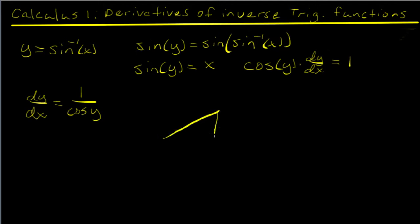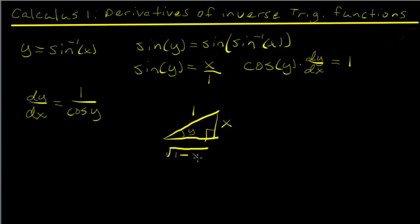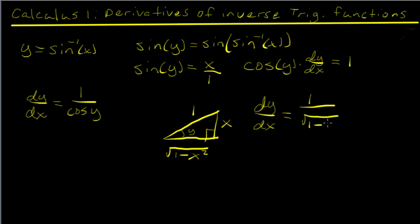Now we construct a triangle. We call this angle y, and we know that the sine of y is x over one — sine is opposite over hypotenuse. By the Pythagorean theorem, the adjacent side is the square root of one minus x squared. So the cosine of y, which is adjacent over hypotenuse, is the square root of one minus x squared over one. Therefore, our derivative dy/dx equals one over the square root of one minus x squared.